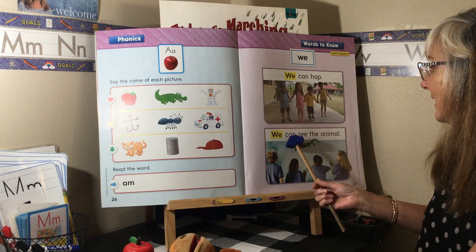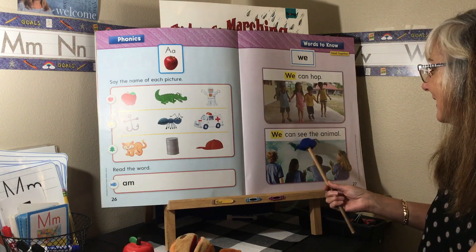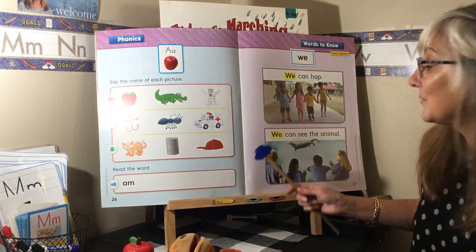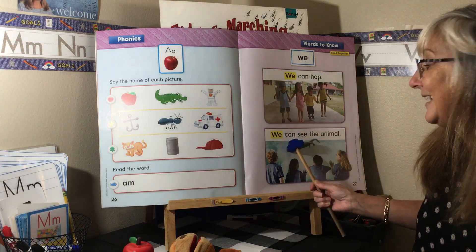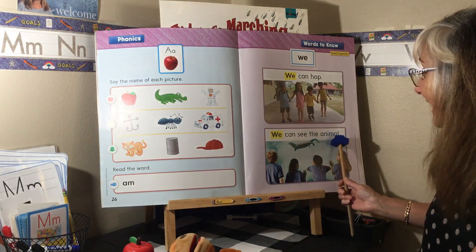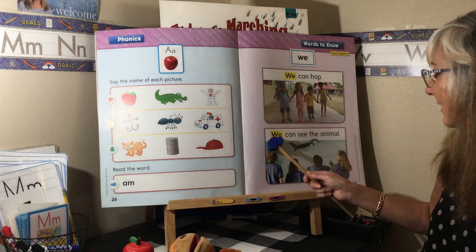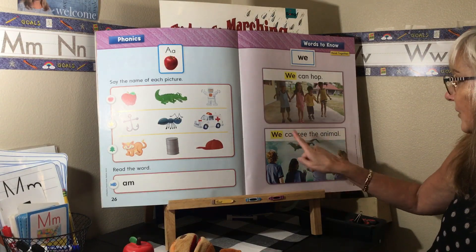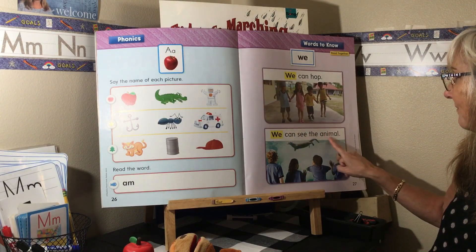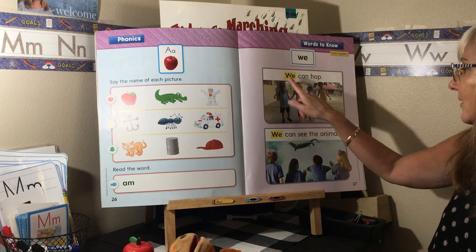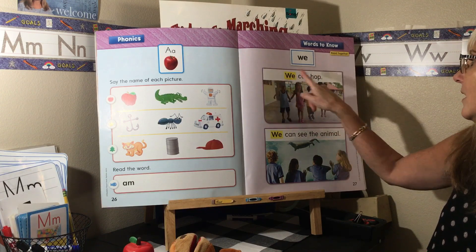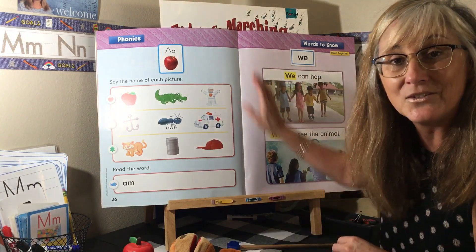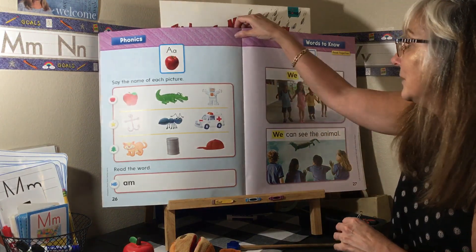It says: we can hop! Can you do that with me? We can hop. Now listen — I'm going to do this sentence: we can see the animal. Your turn: we can see the animal. Let's count how many words there are: one, two, three, four, five words. Let's count the words here: one, two, three — that one only has three words.